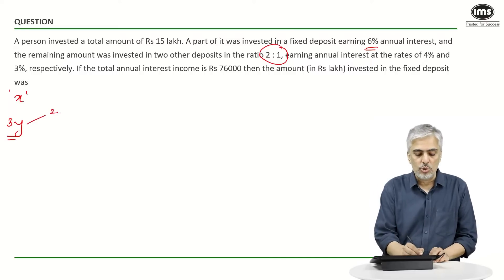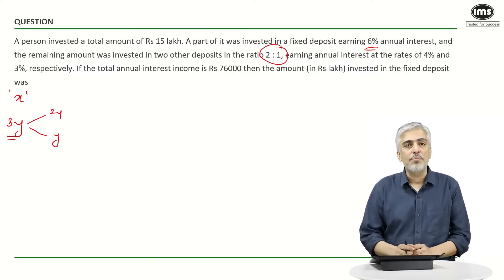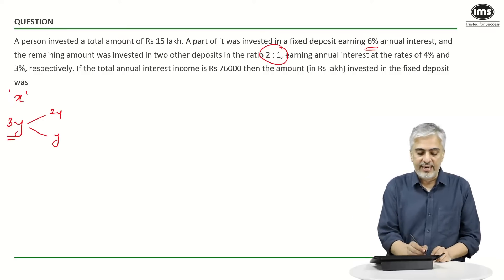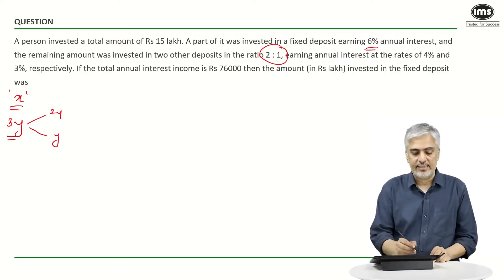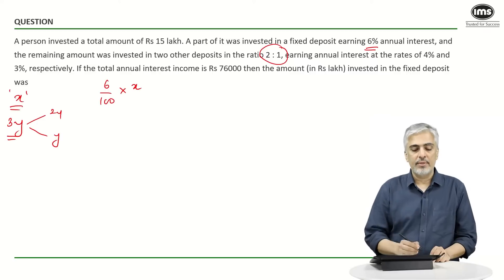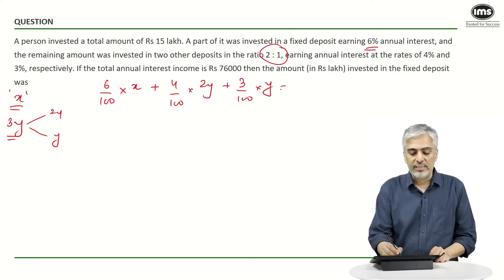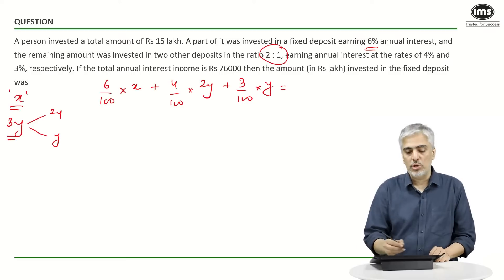Right, so which means there will be 2y invested at 4% and y invested at 3%. I will get one equation from here. Let's see, 6% of x will become 6/100 × x plus 4% of 2y, that is 4/100 × 2y, plus 3% of y, which is 3/100 × y, is equal to 76,000.